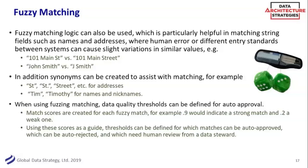One way you can help with that is this idea of fuzzy matching. There are different algorithms that can do that. Is Jay Smith and John Smith the same person? Is 'street' the same as 'ST' or an underscore? You can create matching rules and algorithms. Then it's a continuum — if it's over 90% certainty, can you automatically match it? Do you want a person to validate it?